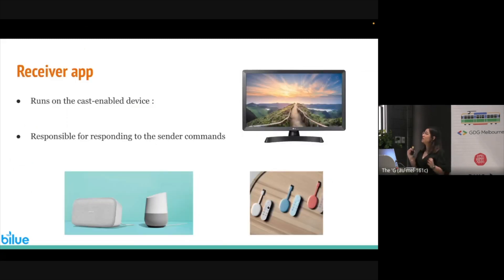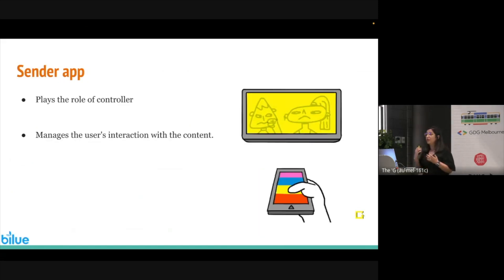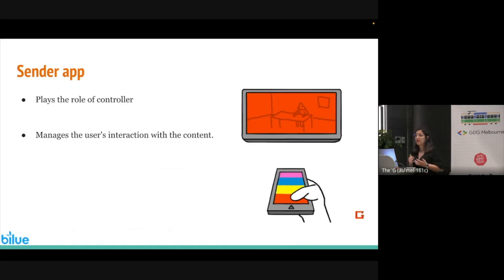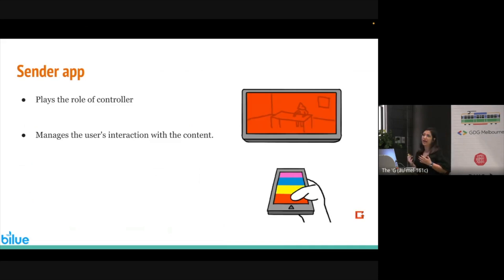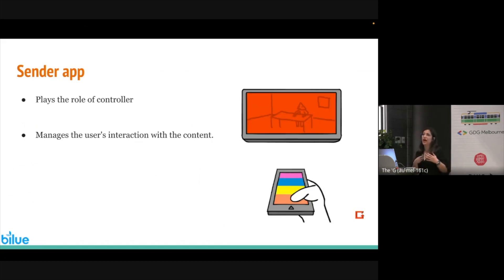The receiver app runs on cast-enabled devices, which can be a smart TV, a Chromecast device, or even a smart speaker. This app is responsible for responding to the sender commands. The sender app plays the role of the controller and manages all user interaction with the content — for example, when you cast your content on the TV and you play, pause, change the volume, or any other interaction.